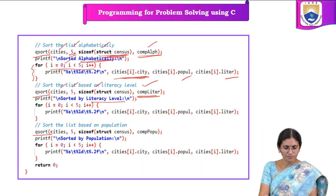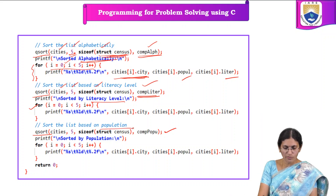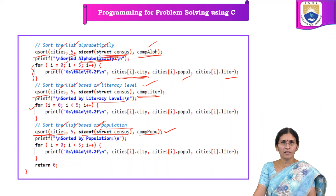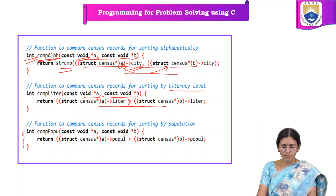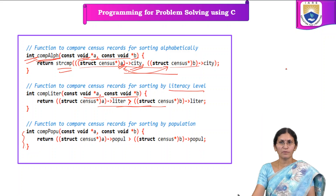After sorting by literacy, we use a for loop to display that sorted list. To sort the list based on population, we again use qsort — giving the array, the size of the array, the size of the data type, and the comparator function for population. This user-defined function is used to sort the list based on population. The city with the highest population will be displayed first, and the city with the least population will be displayed at the end.